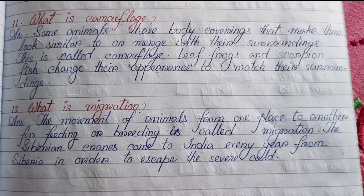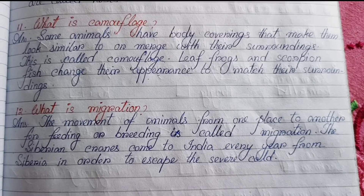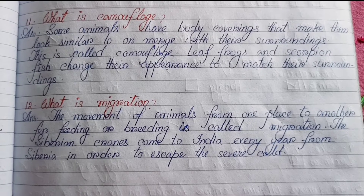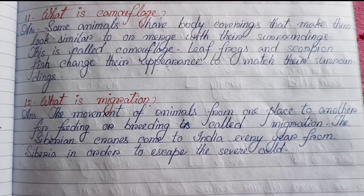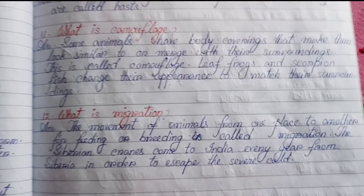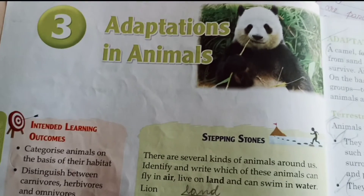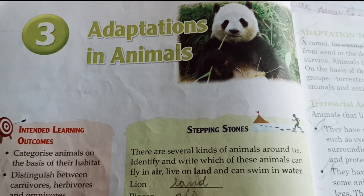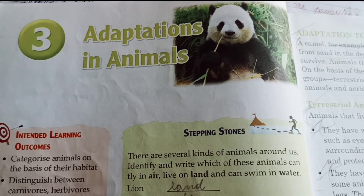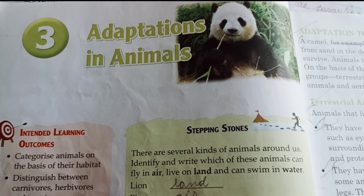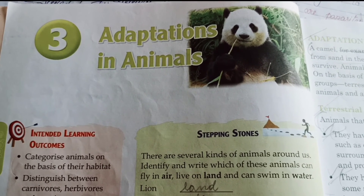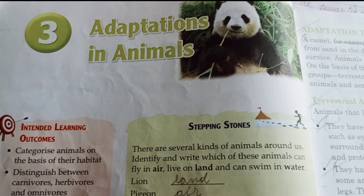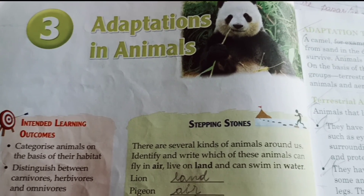Number twelve — What is migration? The movement of animals from one place to another for feeding or breeding is called migration. The Siberian cranes come to India every year from Siberia in order to escape the severe cold. We have now solved the chapter Adaptations in Animals. Don't forget to like the video, subscribe the channel, and press the bell icon. If you have any queries, let me know in the comment box. Check the description box or playlist for other videos. That's all for today — see you soon with a new video. Take care and bye.